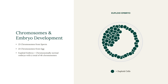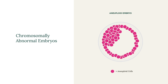An embryo that has the correct number of 46 chromosomes is known as a euploid embryo. There is a risk that the sperm or egg may contain an extra chromosome, or may be missing a chromosome. This will lead to the fertilisation of a chromosomally abnormal embryo, or an aneuploid embryo. An embryo with too many or too few chromosomes may either fail to implant in a woman's uterus, or it may result in miscarriage.